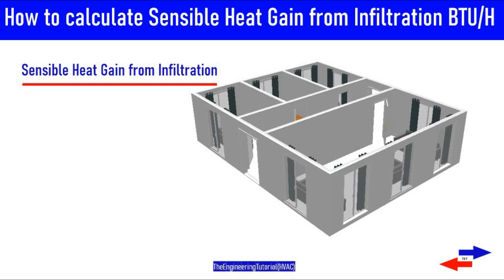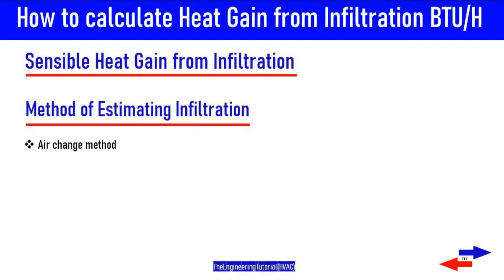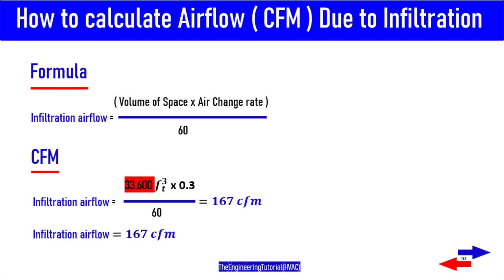The topic of this video is sensible heat gain from infiltration in BTUs per hour using the air change method. The air change method involves estimating the number of air changes per hour which can be expected in spaces of a certain construction quality, so by using this method the quantity of infiltration is estimated.